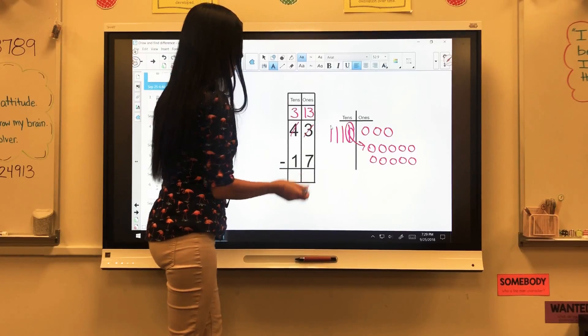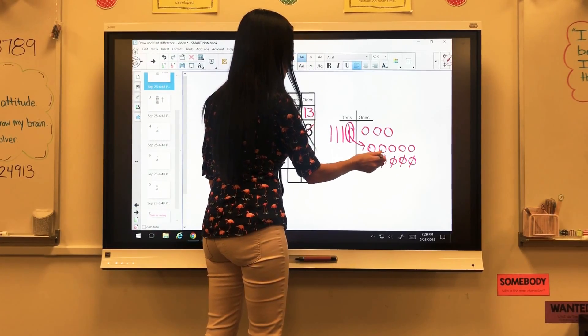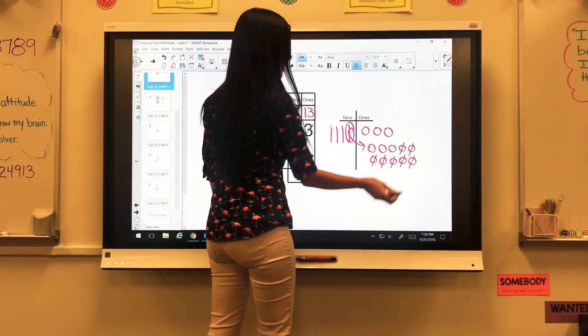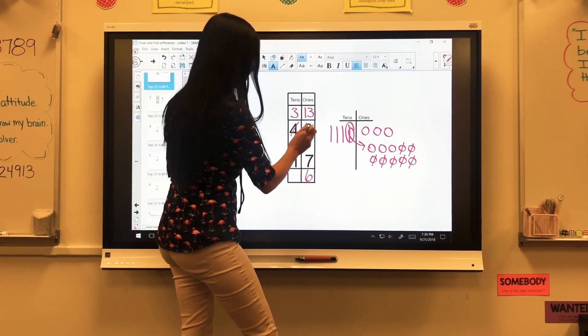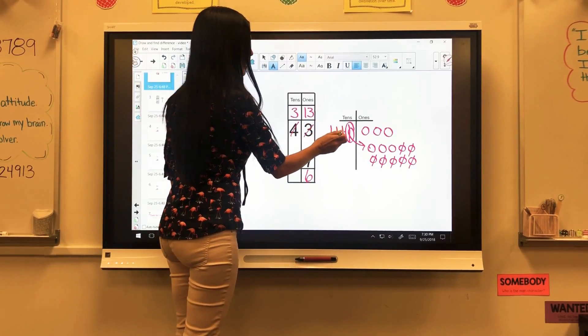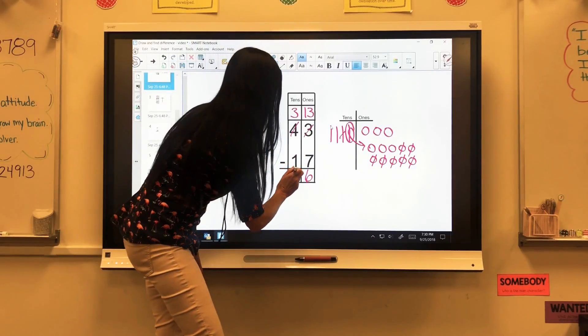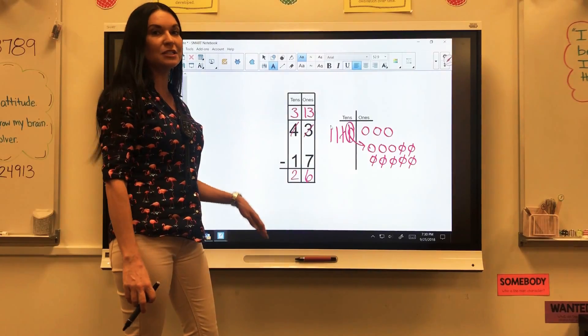Now that I have 13 minus 7, I'm going to take away 7. 1, 2, 3, 4, 5, 6, 7. And I have 1, 2, 3, 4, 5, 6 left. So 13 minus 7 is 6. On my tens side, I have 3. I need to take away one of those and that's going to give me 2. So 43 minus 17 is 26.